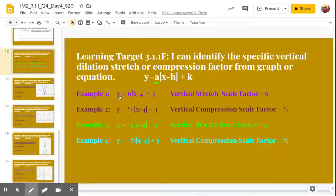So our example number one, our A value is six. Therefore, our scale factor is six, and that number is bigger than one, so it has a vertical stretch. Example two, our A value can be seen right here. It's one-half. So our scale factor is one-half. Therefore, it has a vertical compression. It's going to be a fatter V.